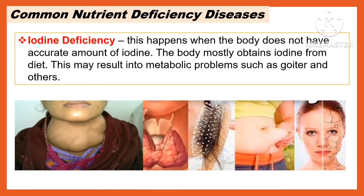Another common nutrient deficiency disease is iodine deficiency. This happens when the body does not have an accurate amount of iodine. The body mostly obtains iodine from the diet. This may result in metabolic problems such as goiter and others.